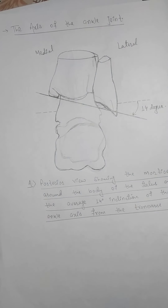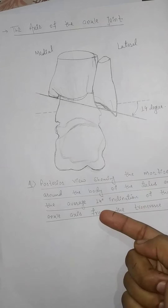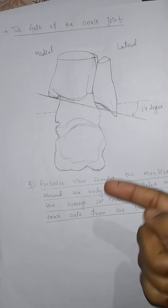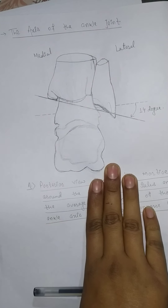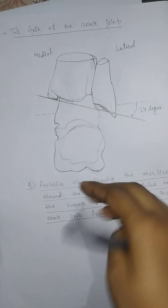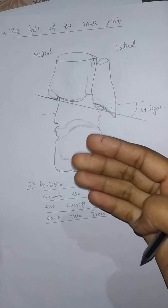There is also more distal extension on the posterior margin of the tibia compared to the anterior margin.